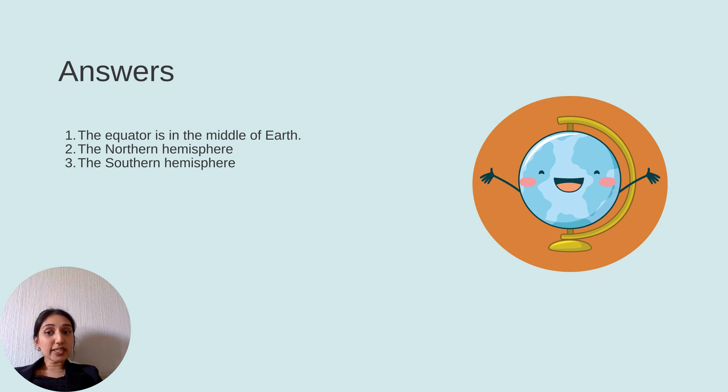Good job guys. Number one, where is the equator? The equator is in the middle of earth. Number two, what is the northern part of earth called? That is called the northern hemisphere. Number three, what is the southern part of earth called? It's called the southern hemisphere.